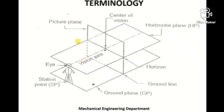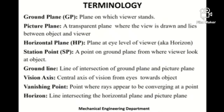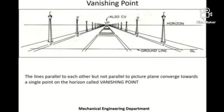The picture plane can be understood as an infinite-sized transparent sheet whose only purpose is to capture the perspective projection of the given object. All the terms discussed — ground plane, picture plane, horizontal plane, station point, ground line, vision axis, vanishing point, and horizon — are again summarized on this slide.